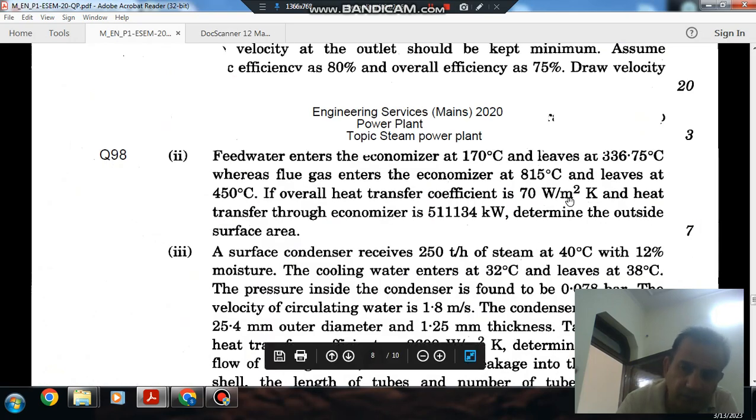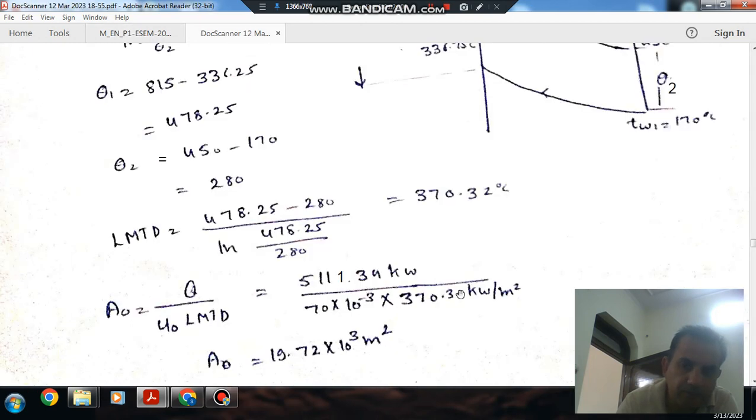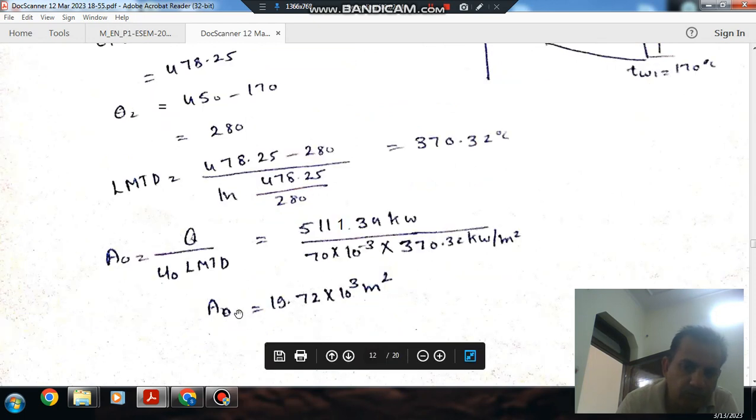So Q is 511,134 kilowatts. Converting units properly, the area will be 19.73 meter square.